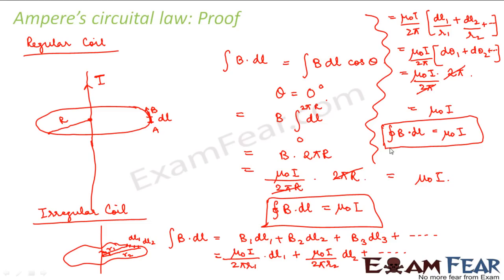So in Ampere's Circuital Law, you simply choose one Amperian loop. Once you choose it, the integration of B·dl over that closed loop equals μ₀I, where I is the current flowing through that Amperian loop.